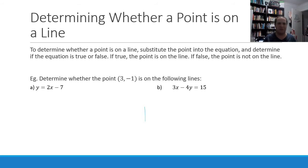So a couple of examples. Determine whether the point (3, -1) is on the following lines. We'll just sub in x equals 3 and y equals negative 1. So subbing those in you've got negative 1 equals 2 times 3 minus 7. 2 times 3 is 6 minus 7 is negative 1. That's true. So therefore, yes, (3, -1) is on the line.